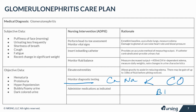Monitor renal function labs, including BUN, creatinine, albumin, and GFR — which is the glomerular filtration rate. Monitor the amount of protein lost in the urine; serum protein levels will be decreased while urine protein levels will be elevated. Also, a kidney biopsy may be required, especially if the patient is diabetic.